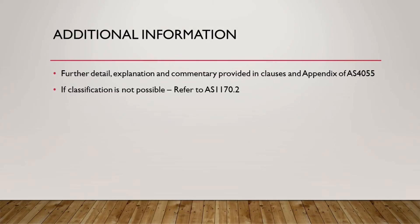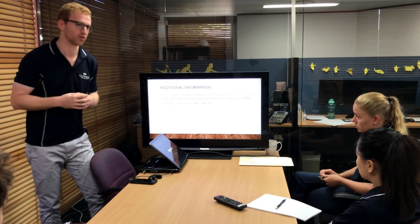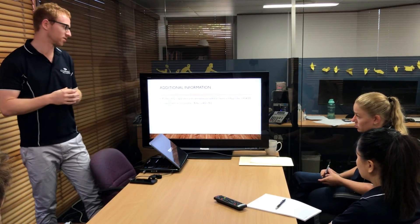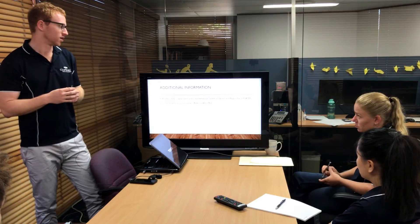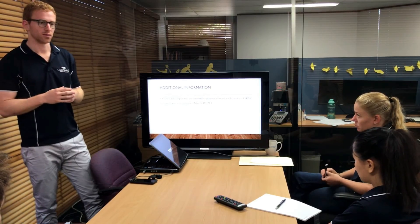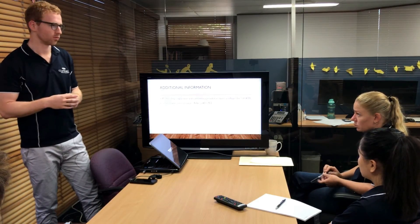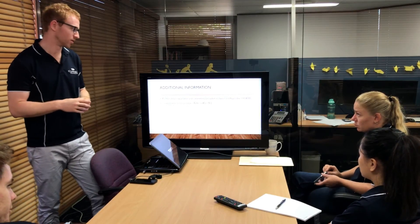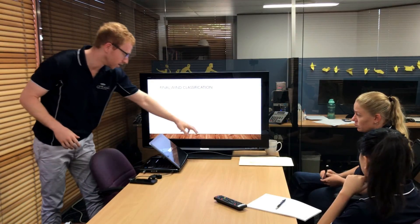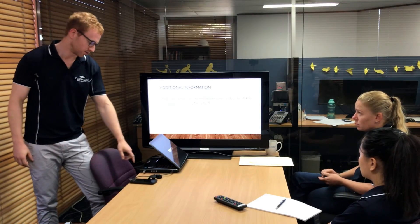I want to stress that I've really just hit on the main points here. If you go in to read AS4055, there's a lot more detailed explanation, and there are commentary examples in the appendix showing how to use all the different clauses — because you will find that when you're not familiar with it, it's sometimes hard to make a decision. Also, if classification is not possible — whether due to geometric non-compliance, it's not a Class 1 or 10 building, or it falls outside the table into an NA result — you need to go to AS1170 to get a specific calculation of wind speed.